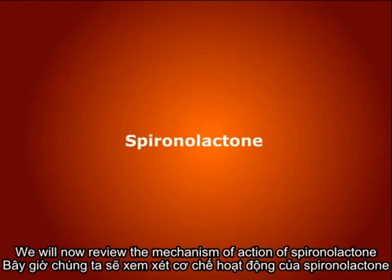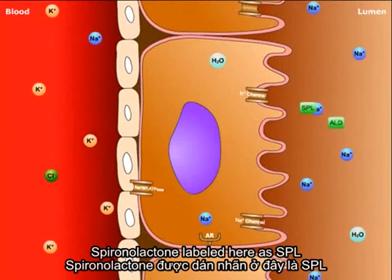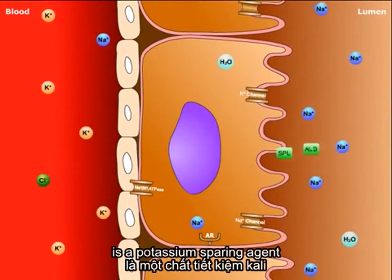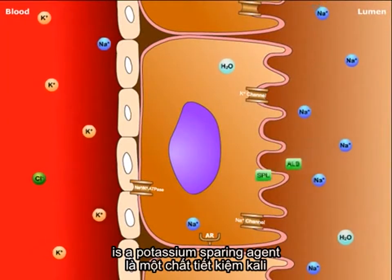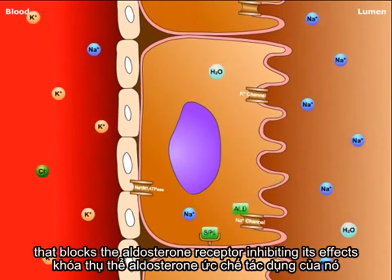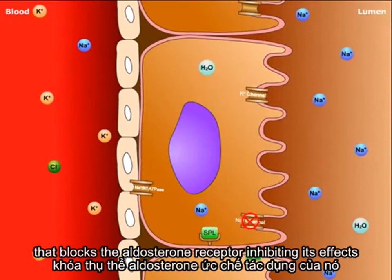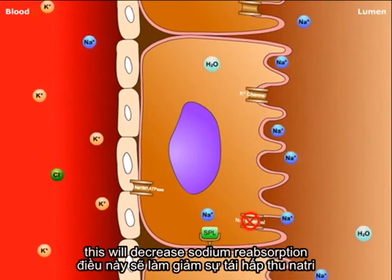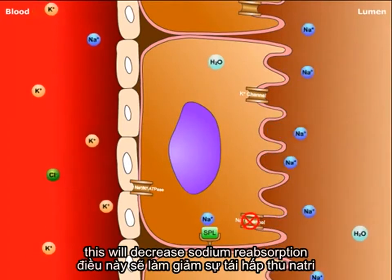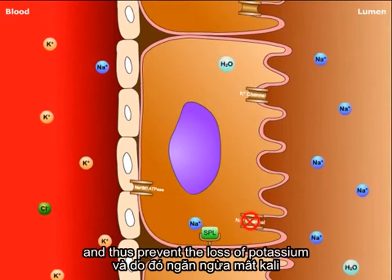We will now review the mechanism of action of spironolactone. Spironolactone, labeled here as SPL, is a potassium-sparing agent that blocks the aldosterone receptor, inhibiting its effects. This will decrease sodium reabsorption and thus prevent the loss of potassium.